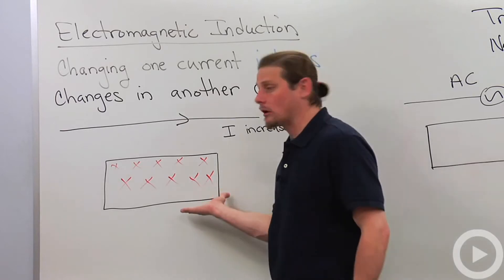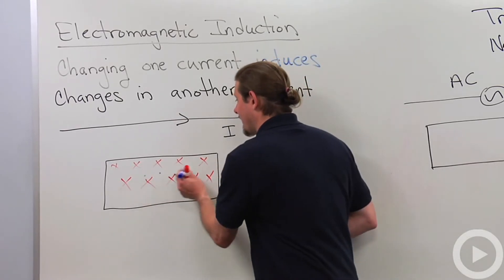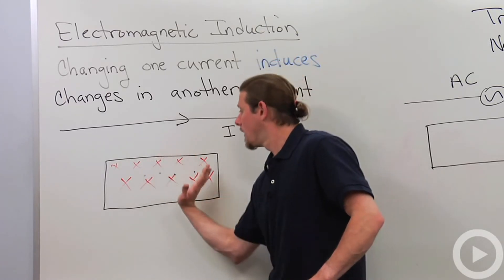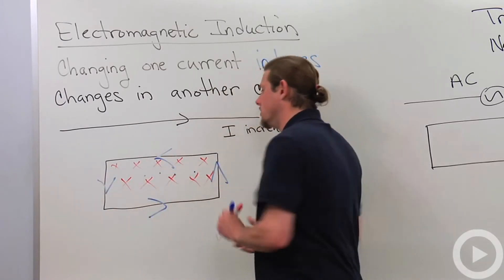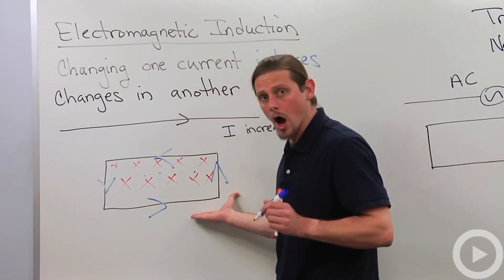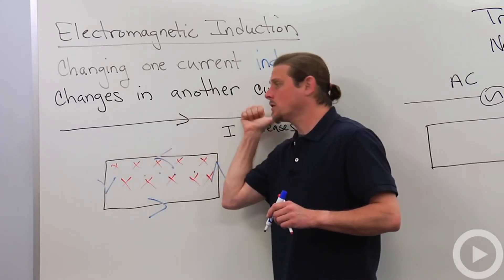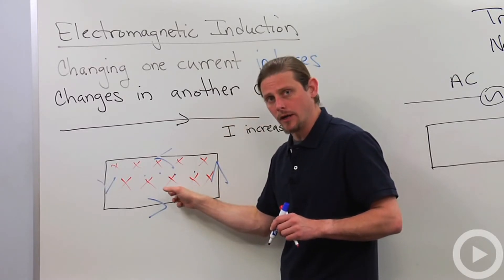So how does the current have to go to generate a magnetic field that's coming out of the board? Right hand rule: magnetic field comes out, fingers show the direction of the induced current. So when we've got this long wire, we increase the current, we generate a current down here.